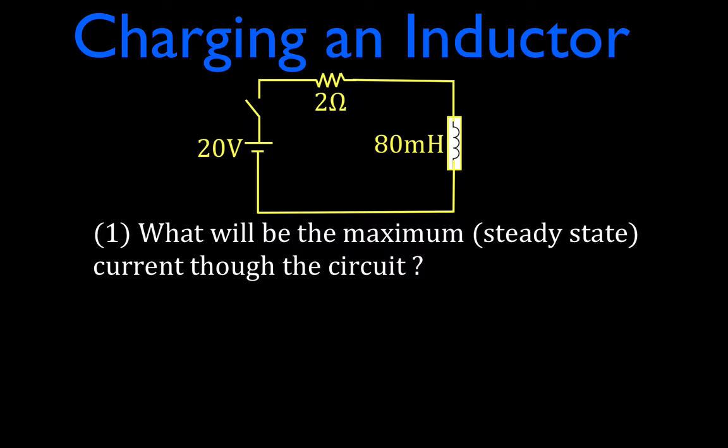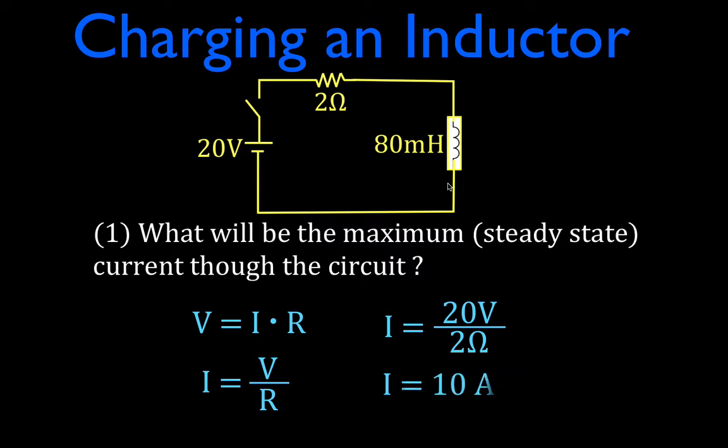We want to know what the maximum or the steady state of the current will be. Well, when the current reaches this maximum, when the current reaches this steady state, the inductor will no longer be playing a part. It will be no longer delaying current through the circuit and all the voltage will be across the resistor. Really then we just have a resistor and a source and this acts like a short inductor. So we can just use Ohm's law, V equals I times R. The current is the voltage divided by the resistance. The voltage is a 20 volt source and a 2 ohm resistor. That means the maximum current, the eventual maximum current will be 10 amps. Okay, pretty straightforward. Number one.